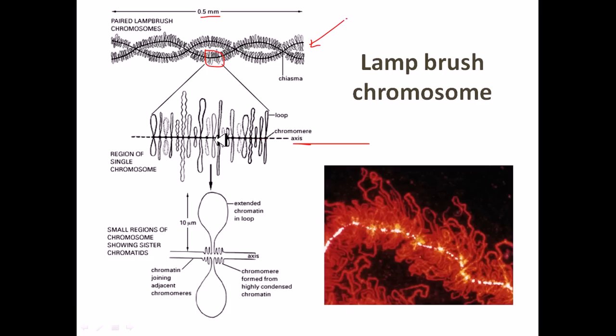If we zoom into the structure of one of these loop structures, we can see one axis. This axis has a junction point, which is called the chromomere, made from highly condensed chromatin sequences.